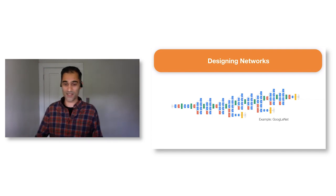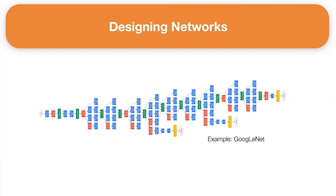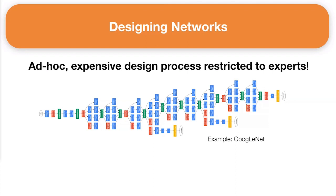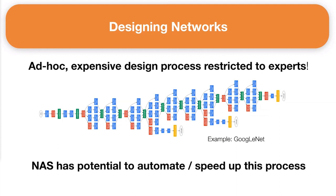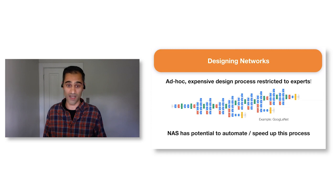In the context of this talk, I'll be discussing neural architecture search, which is an important step towards democratizing machine learning—addressing fundamental efficiency and automation issues currently plaguing broader adoption. Neural architecture search broadly focuses on how we design neural networks in the first place. Here's a picture of GoogleNet, a deep learning model that won the ImageNet competition in 2014. It's over 20 layers with pretty ad hoc connections—this is indicative of how models are generated even today. NAS has the potential to automate and speed up this process, thereby democratizing deep learning.